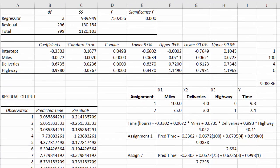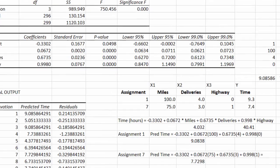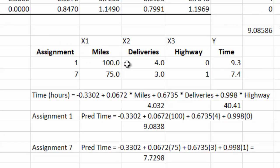As far as making predictions, we do it the usual way by plugging in the x variable values. Just for illustration, I copied a couple of assignments from the data, assignment 1 and assignment 7 to do some sample calculation. For assignment 1, we plug in 100 for the miles, 4 goes into deliveries, and 0 goes into highway. And that gives us 9.0838. Assignment 7: plug in 75 miles, 3 deliveries, and 1 for the highway gives us 7.7298.